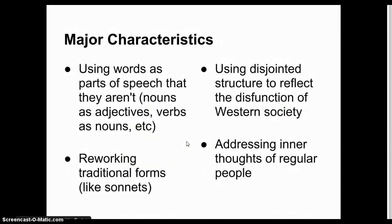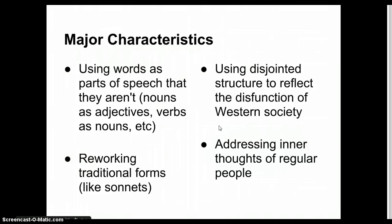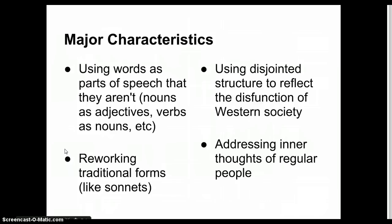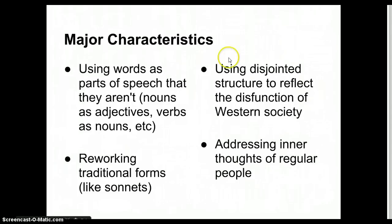Some major characteristics that you'll see in modernist literature: they often use words as parts of speech that they aren't, such as nouns used as adjectives, verbs as nouns, et cetera. When we study E.E. Cummings, you'll see that really heavily. Shakespeare did that in his writing, but the English language had really been standardized since the 1600s, late 1500s, so there had been less innovation with the language itself. But modernist poets wanted to change that. They reworked traditional forms — they used the sonnet. We looked at Design by Robert Frost, where he changed the traditional form of the sonnet into something completely different. They used disjointed structure to reflect the dysfunction of Western society.